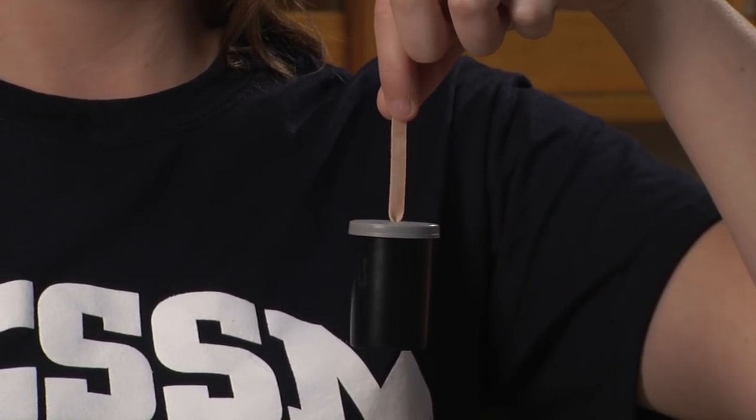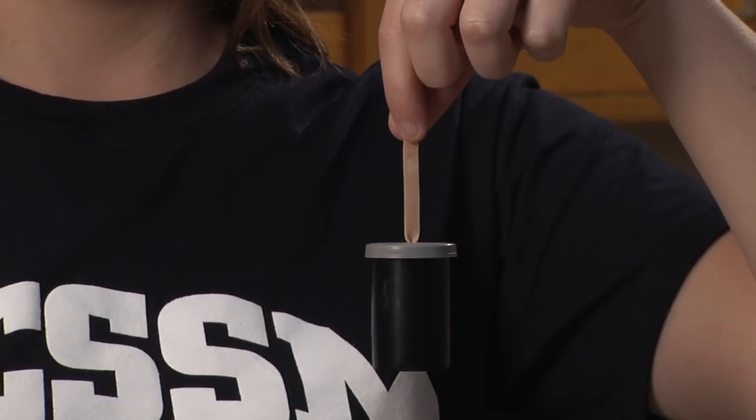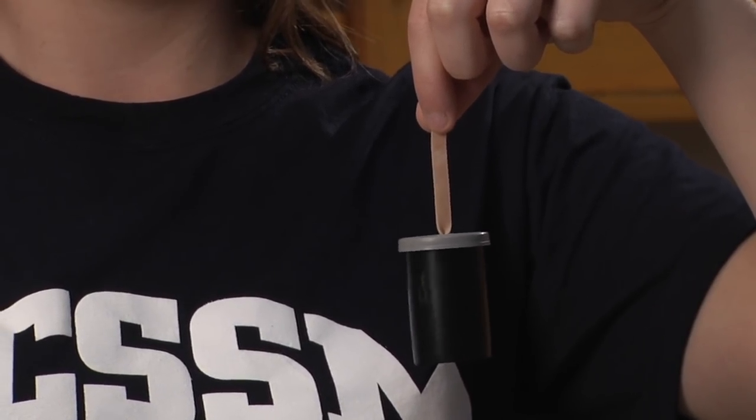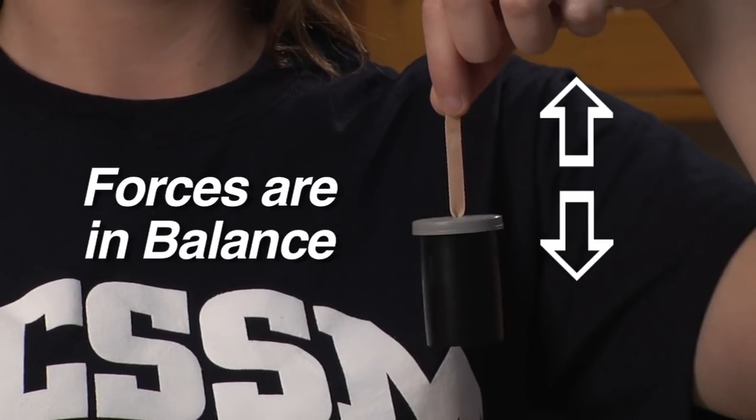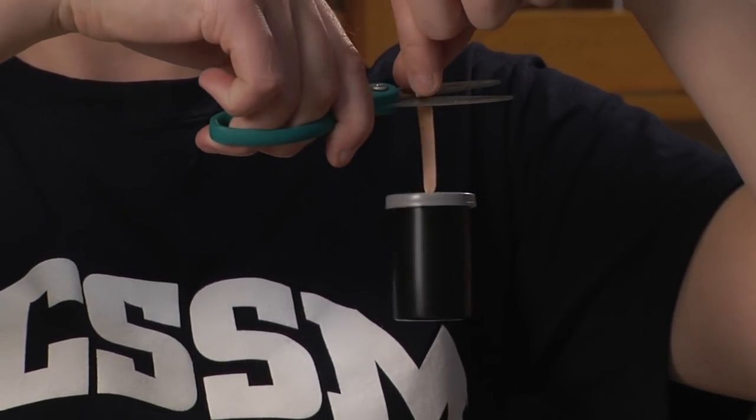The force of gravity pulling the object down and the band holding it up are the same. So would you say the forces are balanced or unbalanced? Since it doesn't fall or float up, the forces are balanced. Now, what happens if you cut the rubber band?